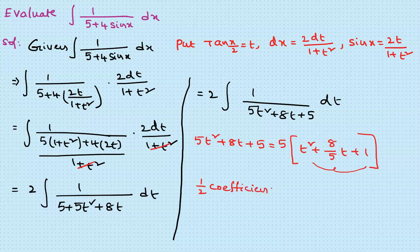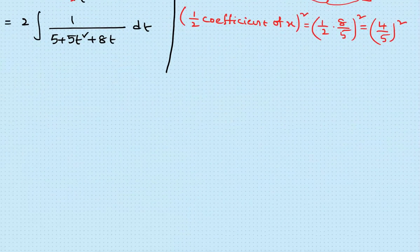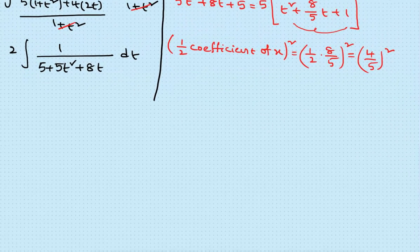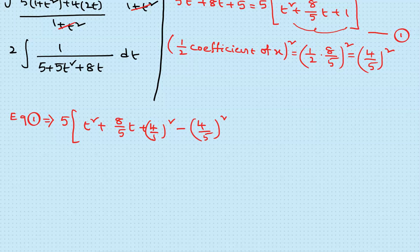Half of the coefficient of t is (1/2)·(8/5) = 4/5. So we add and subtract (4/5)². This gives: t² + (8/5)t + (4/5)² − (4/5)² + 1. Expanding the LCM: −16/25 + 25/25 = 9/25. The expression becomes (t + 4/5)² + 9/25.